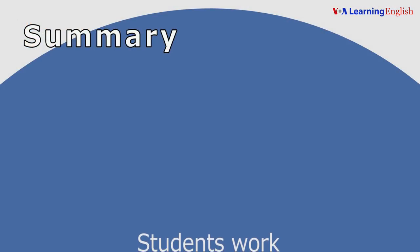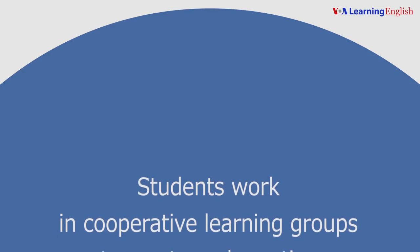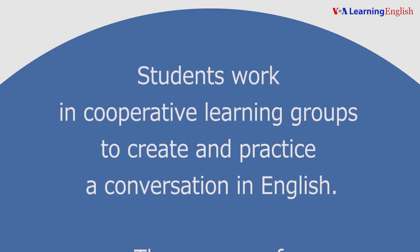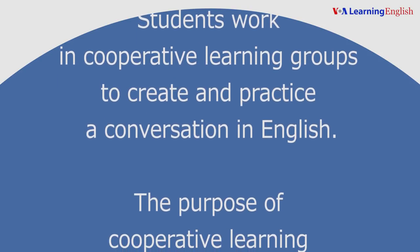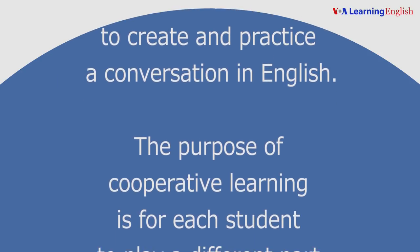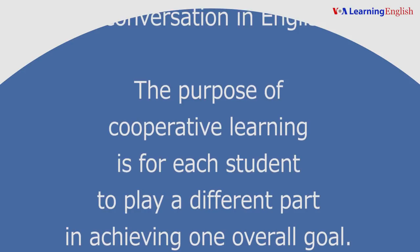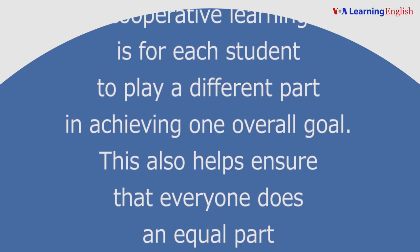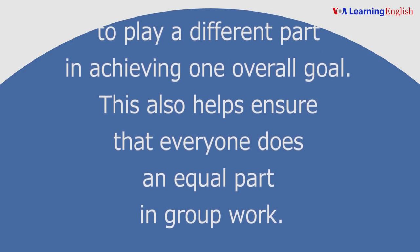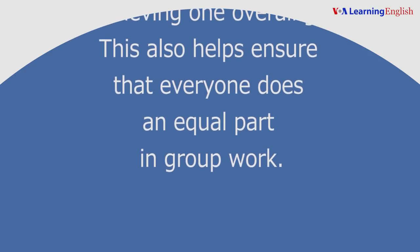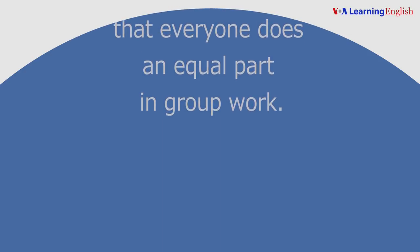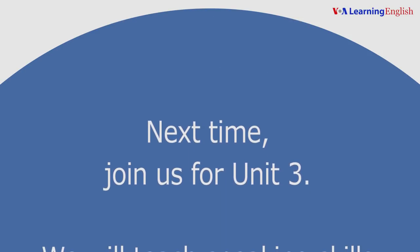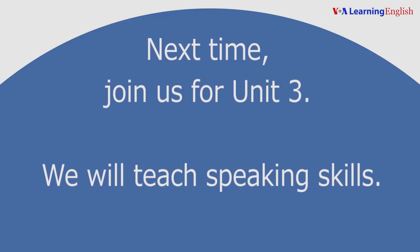Summary. Students work in cooperative learning groups to create and practice a conversation in English. The purpose of cooperative learning is for each student to play a different part in achieving one overall goal. This also helps ensure that everyone does an equal part in group work. Next time, join us for Unit 3. We will teach speaking skills.